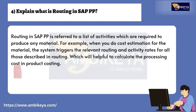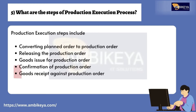Further activities in production planning include defining range of coverage profile and profile for safety time, and defining MRP views. Question number four: explain what is routing in SAP PP. Routing in SAP PP refers to a list of activities which are required to produce any material. For example, when you do cost estimation for the material, the system triggers the relevant routing and activity rates for all those described in routing, which is helpful to calculate the processing cost in product costing.